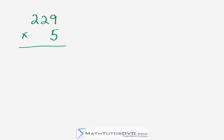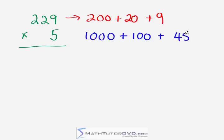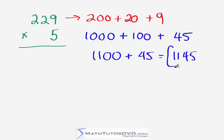Our next problem is 229 times 5. This number is really 200 plus 20 plus 9. So: 5 times 200 is 1,000 — think 5 times 2 is 10, tack on two zeros. Add to that 5 times 20, which is 100 — think 5 times 2 is 10, tack on a zero. Finally, 9 times 5 is 45. The addition: 1,000 plus 100 is 1,100, and we still need to add 45, so the final answer is 1,145.